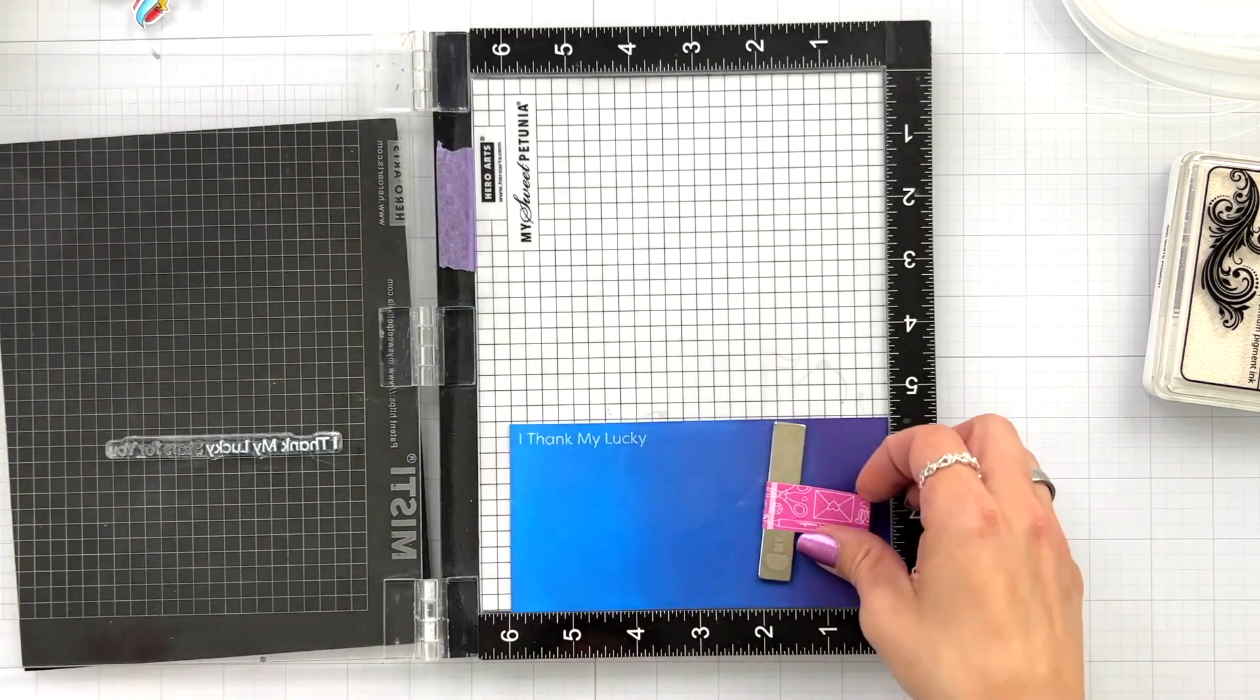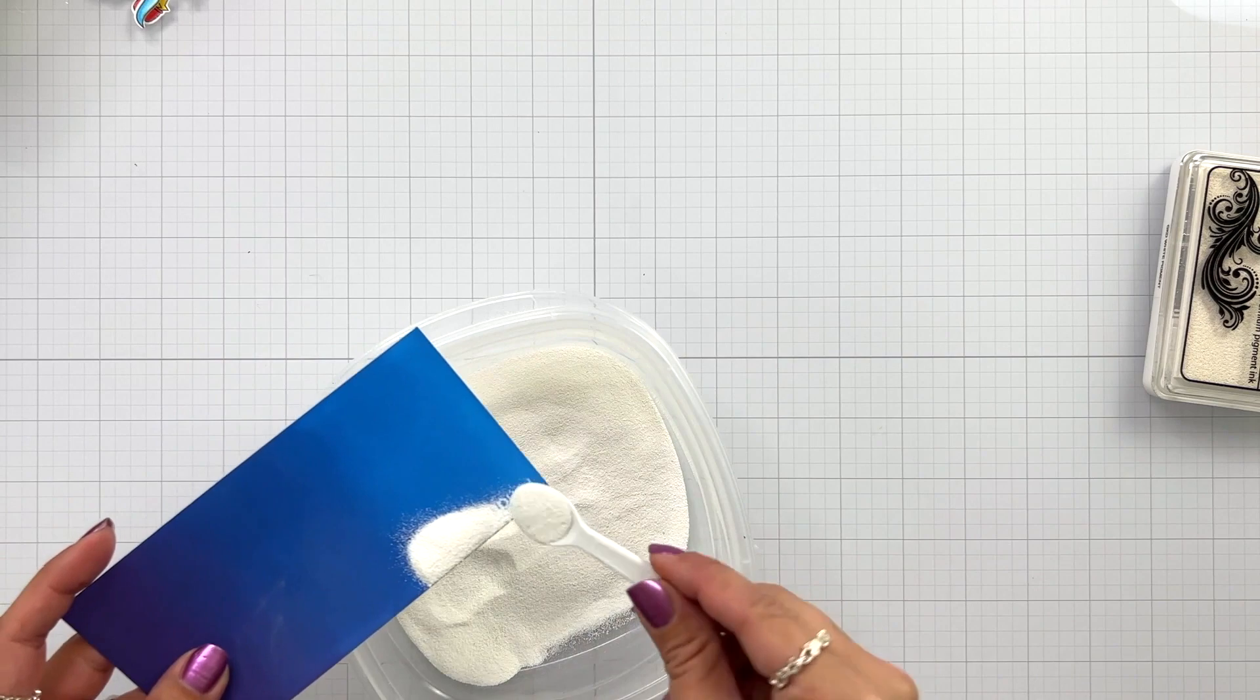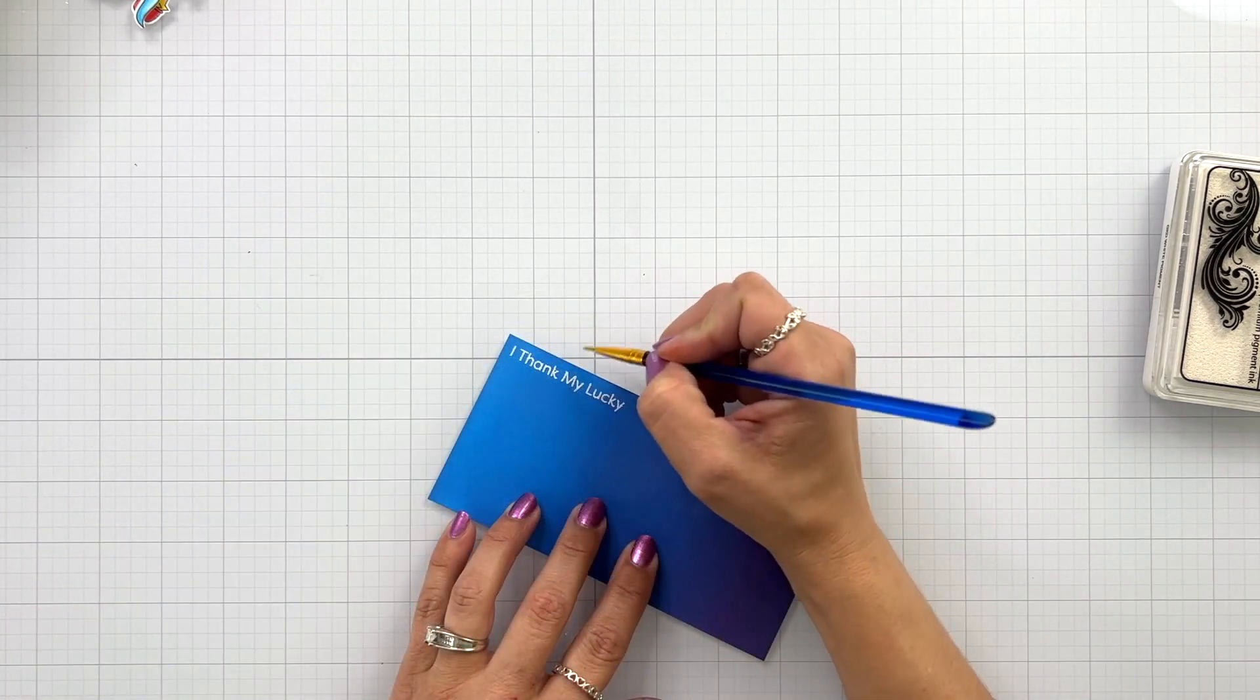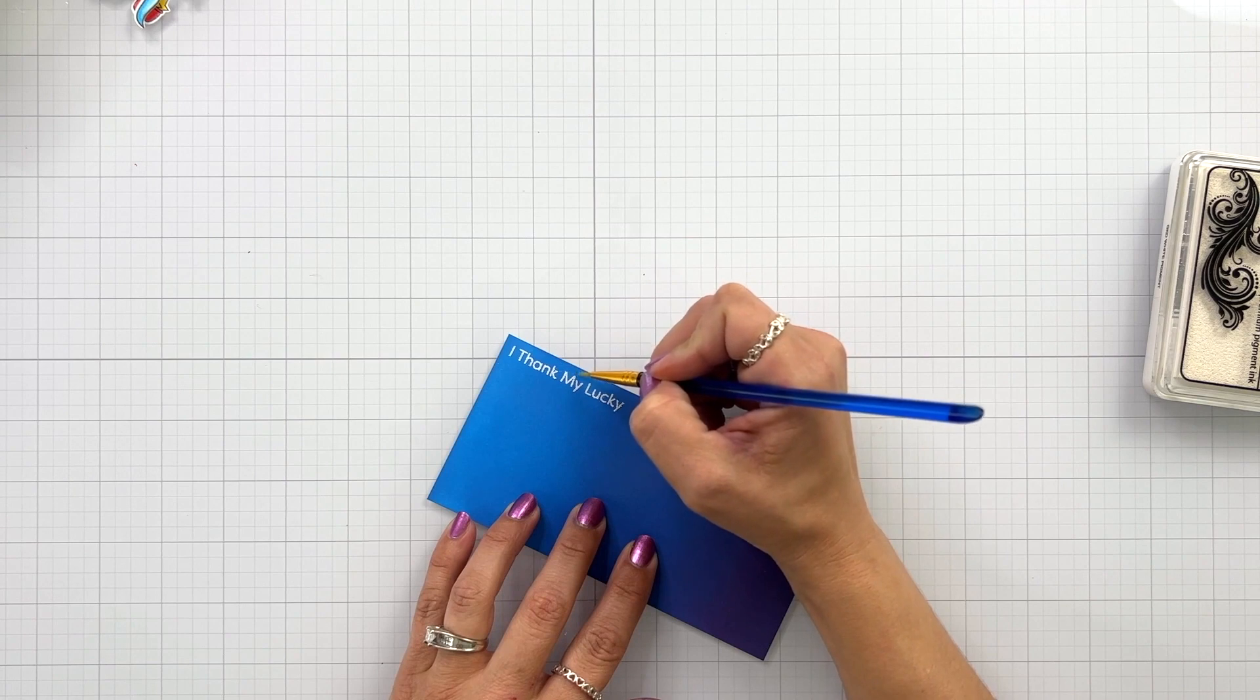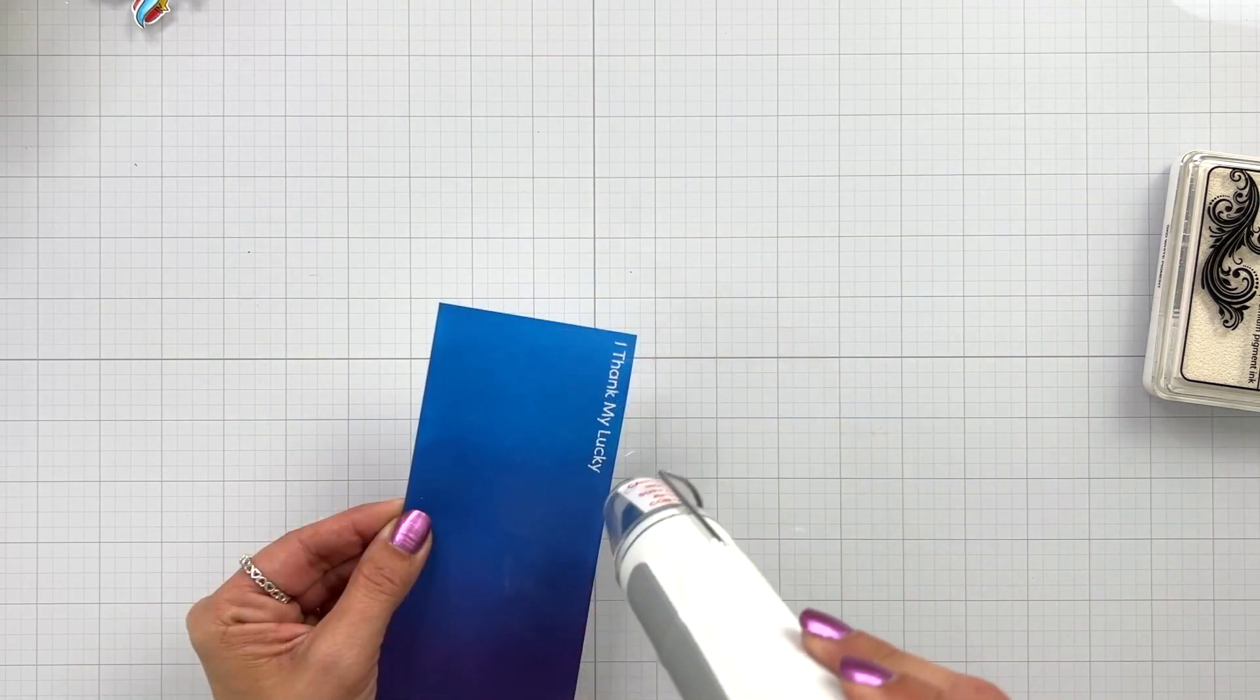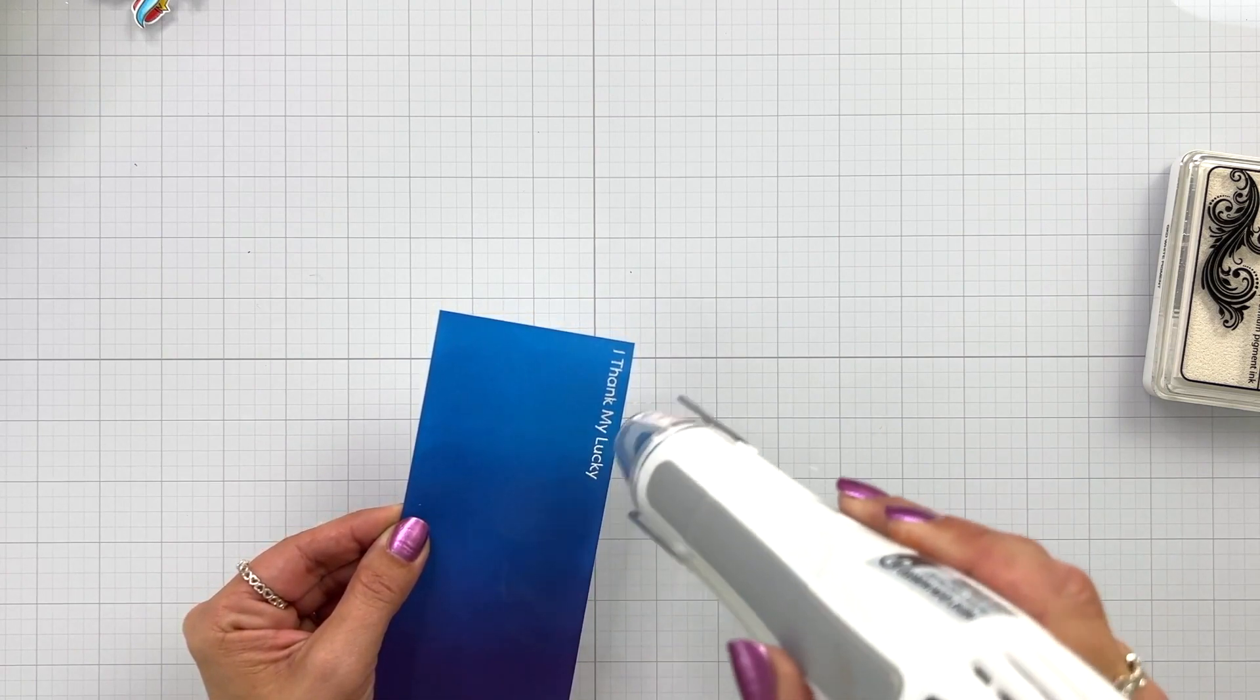I don't want to push too hard and then once I have that stamped I'm going to sprinkle on some white embossing powder and just tap off any of that excess. Before I bring my heat tool in there were a couple little flicks of white embossing powder so I'm just taking a paintbrush and gently pushing those away. Then I can bring in my heat tool and melt that embossing powder.